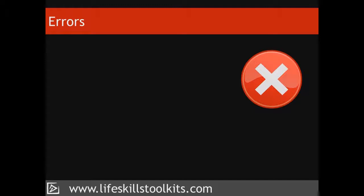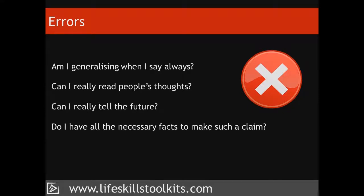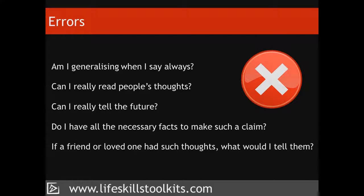Errors. This step involves challenging each of the thoughts we described by searching for the errors or defects in their logic. Asking the following questions can help us find these errors and defects: Am I generalising when I say 'always'? Can I really read people's thoughts? Can I really tell the future? Do I have all the necessary facts to make such a claim? If a friend or a loved one had such thoughts, what would I tell them?